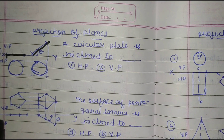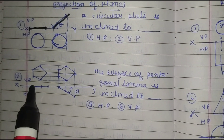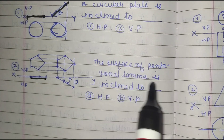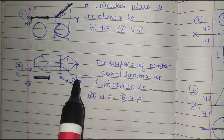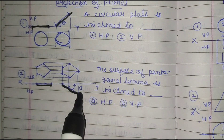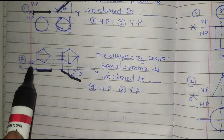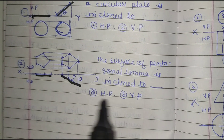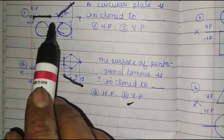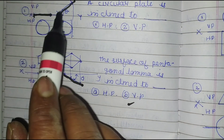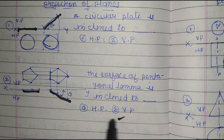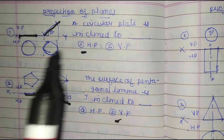The second problem: the surface of the pentagonal lamina is inclined at angle phi — inclined to which plane? Looking at the figure, the surface is inclined to VP. The answer is VP. Here VP and HP are identified, with the surface inclined to VP.